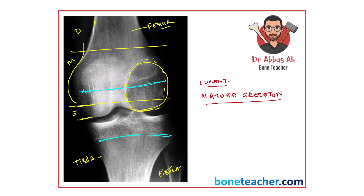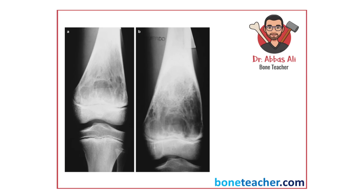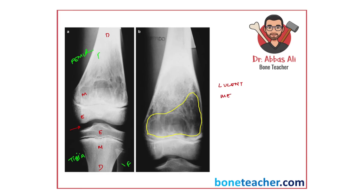So: a lesion of the distal femur from the epiphysis growing into the metaphysis, lucent in nature, in a mature skeleton. Now let's look at another X-ray of the knee joint. Again, this is your femur, tibia, and fibula. The epiphysis, metaphysis, and diaphysis are identified. There is a lesion here which is also lucent, but this time it is a metaphysial lesion — a lucent metaphysial lesion.